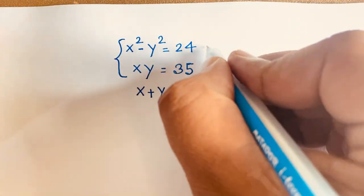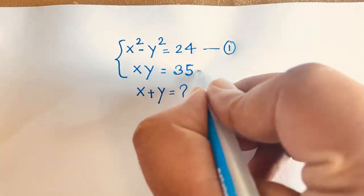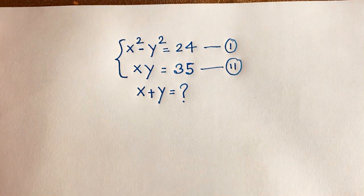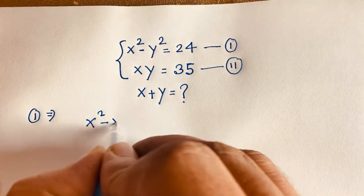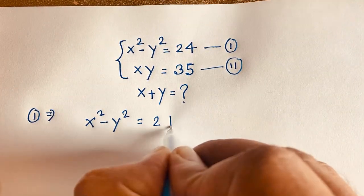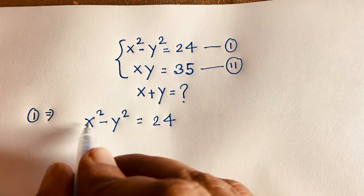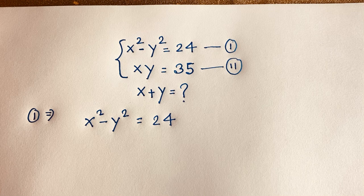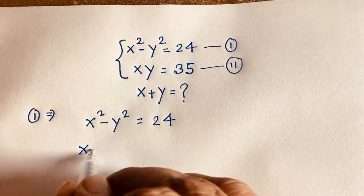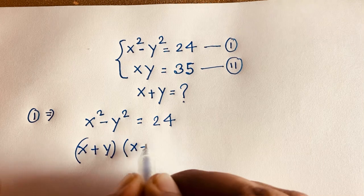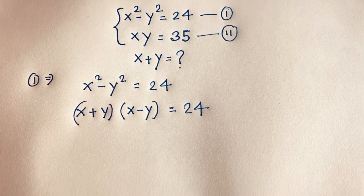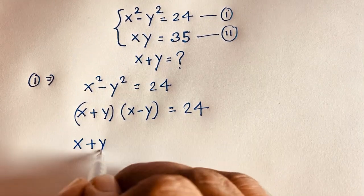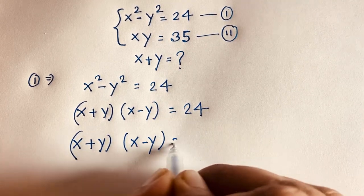We find that there are two equations. This is our first equation and this is our second equation. According to our first equation, x squared minus y squared is equal to 24. We know the algebraic rule: a squared minus b squared equals (a plus b)(a minus b). According to this law, we get (x plus y)(x minus y) is equal to 24.